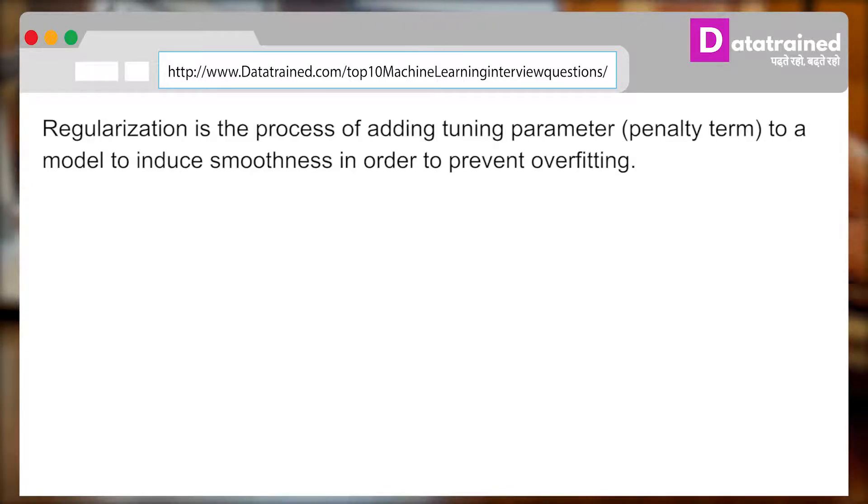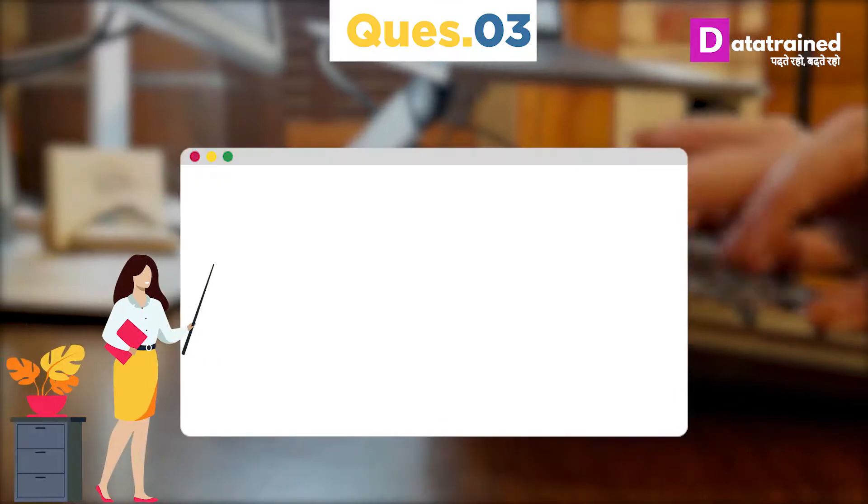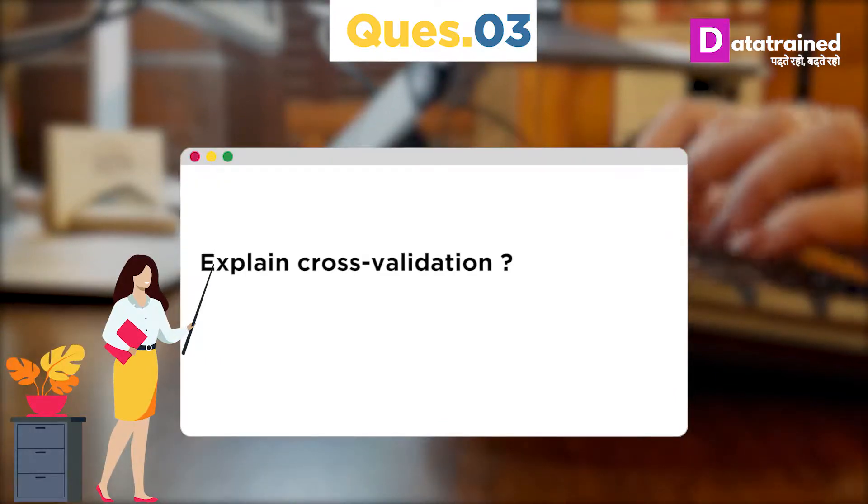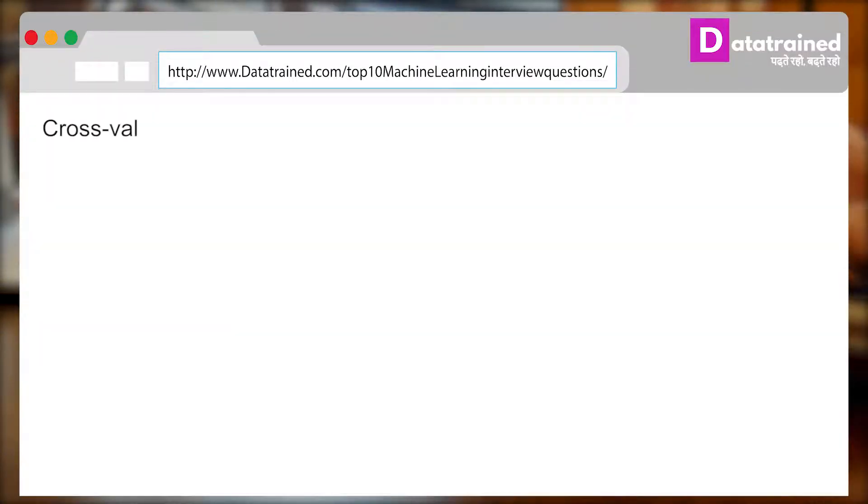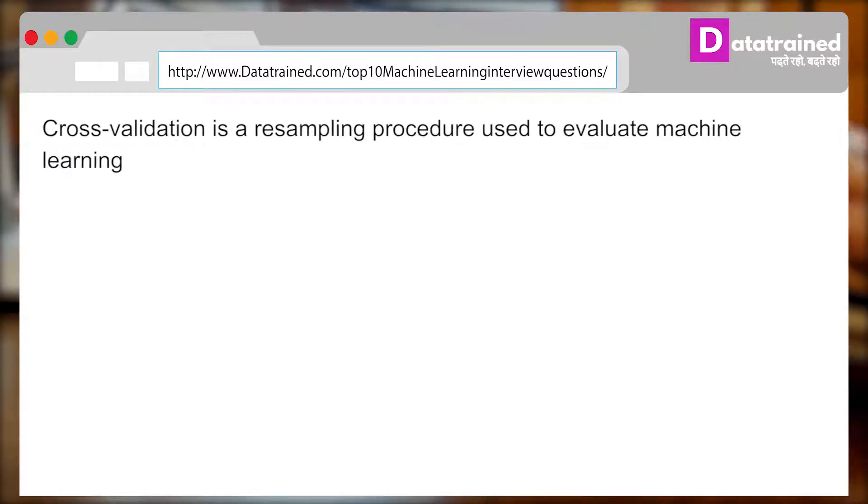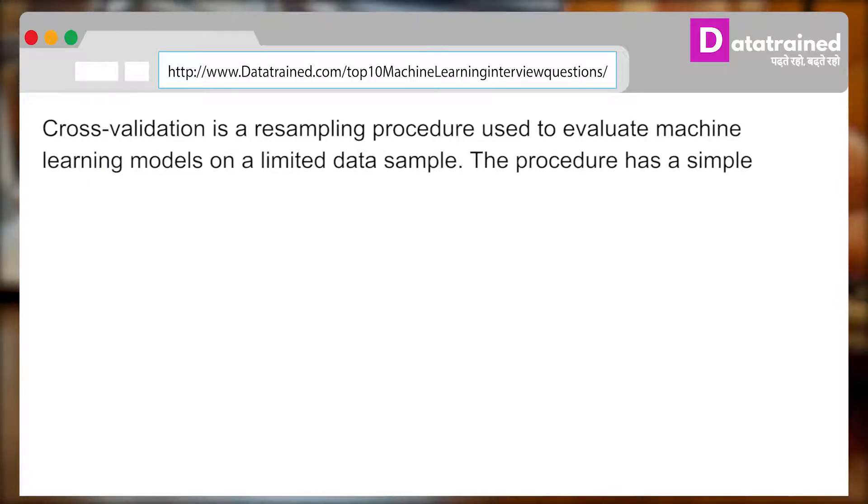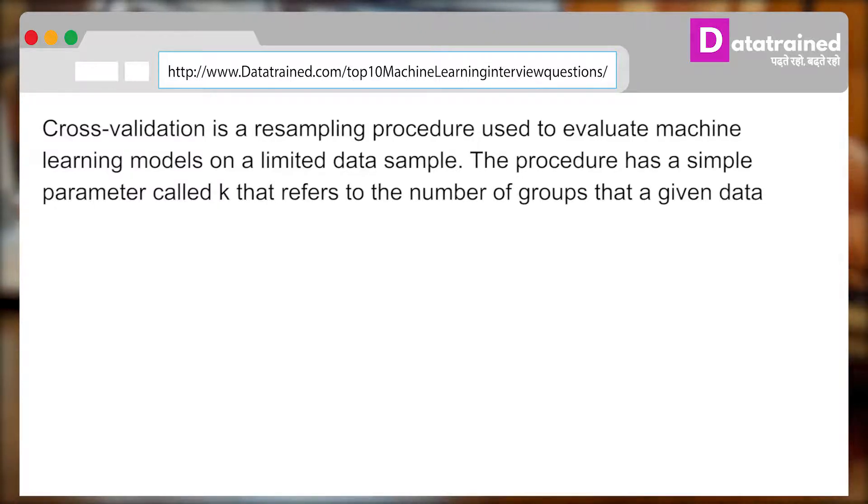Now, the interviewer can ask you: Explain cross-validation. And you can answer: Cross-validation is a resampling procedure used to evaluate machine learning models on a limited data sample. The procedure has a simple parameter called k that refers to the number of groups that a given data sample is to be split into.